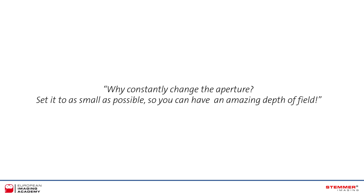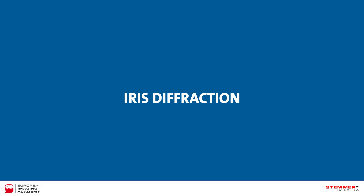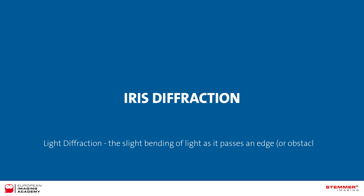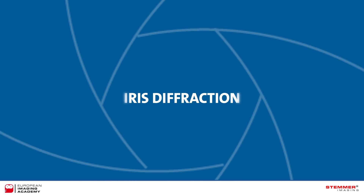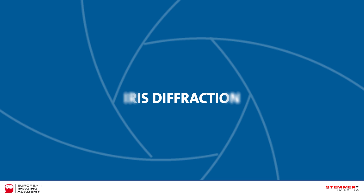Why constantly change the aperture? Set it as small as possible so you can have an amazing depth of field. That would be great, but unfortunately it's not possible. As well as requiring a ridiculously long shutter speed, diffraction starts to become a limiting factor. Diffraction is the slight bending of light as it passes around the edge of an object, caused by interference of light waves with the object and each other. The light travelling right next to the edges of the iris's diaphragm blades is diffracted. As the aperture reduces, the percentage of light that is diffracted increases, and consequently the sharpness of the image is reduced.